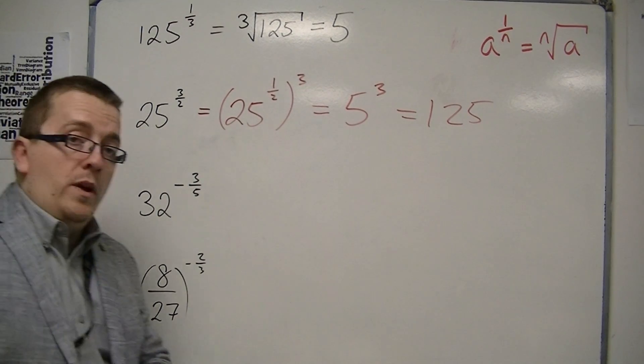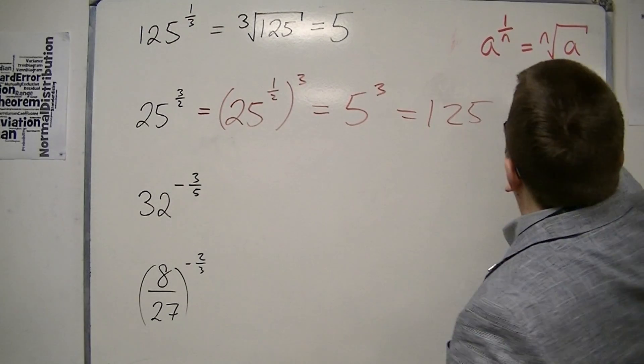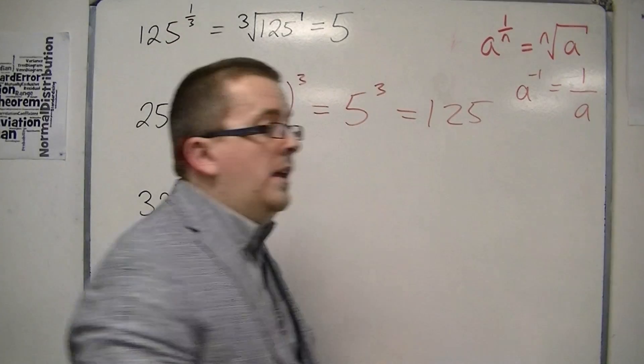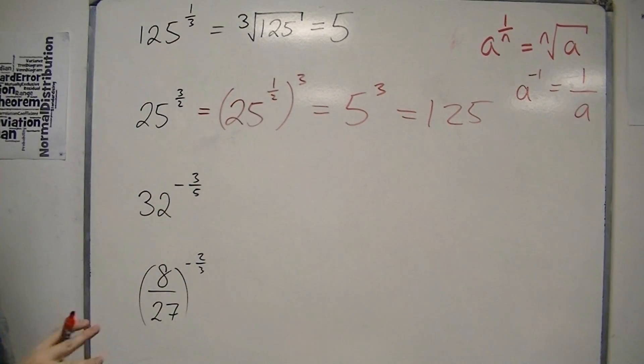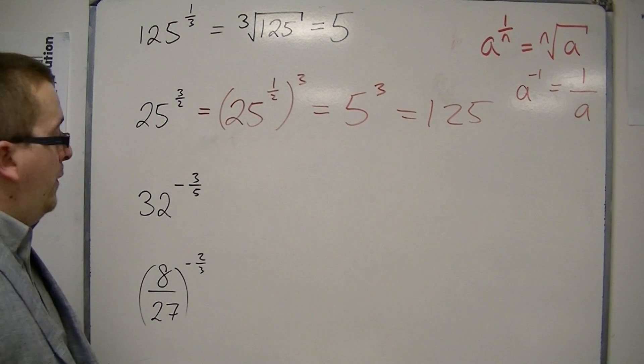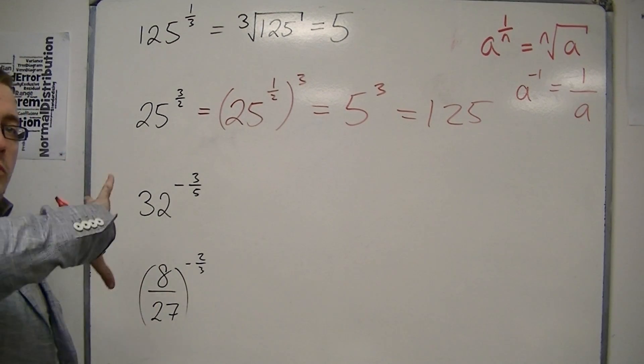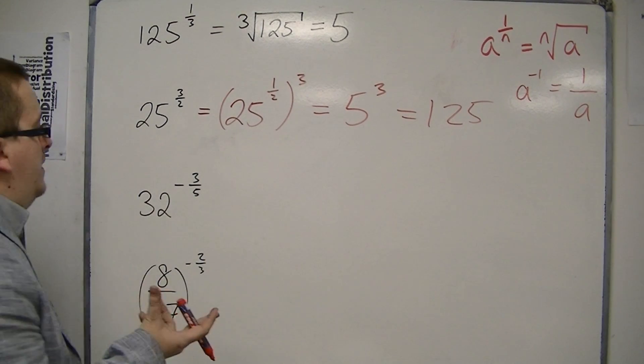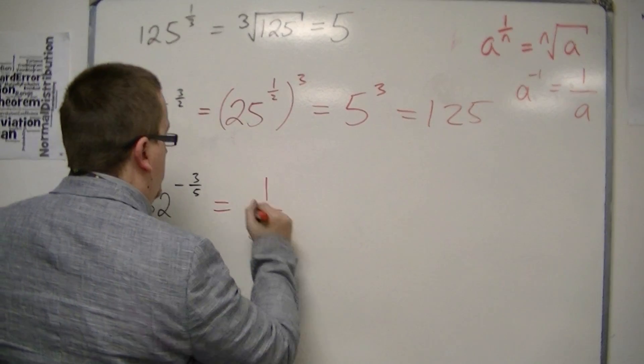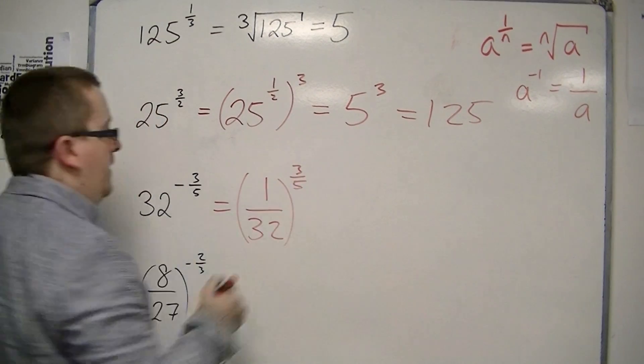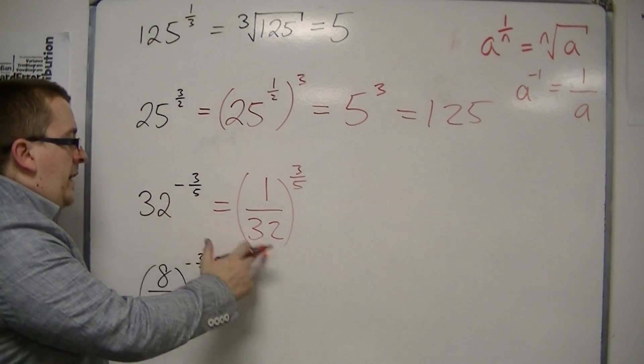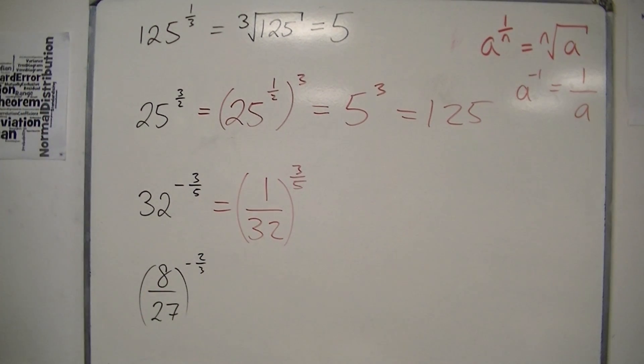Another one of those laws that we looked at said that a to the minus 1 was 1 over a. So the negative in the index flips the number. We've currently got 32 over 1, so it's going to flip it to 1 over 32. This is the same as 1 over 32 to the power of 3 fifths.